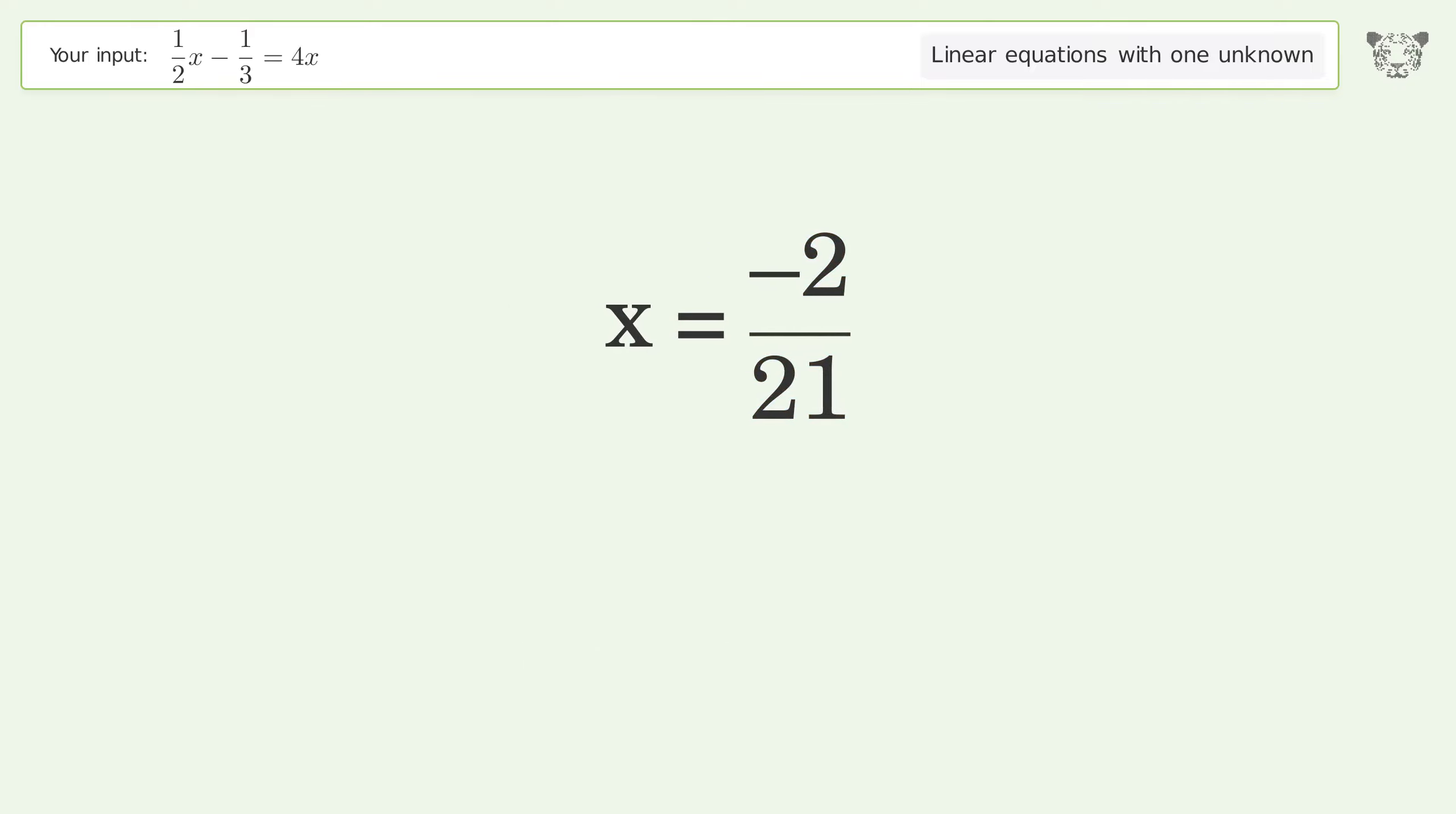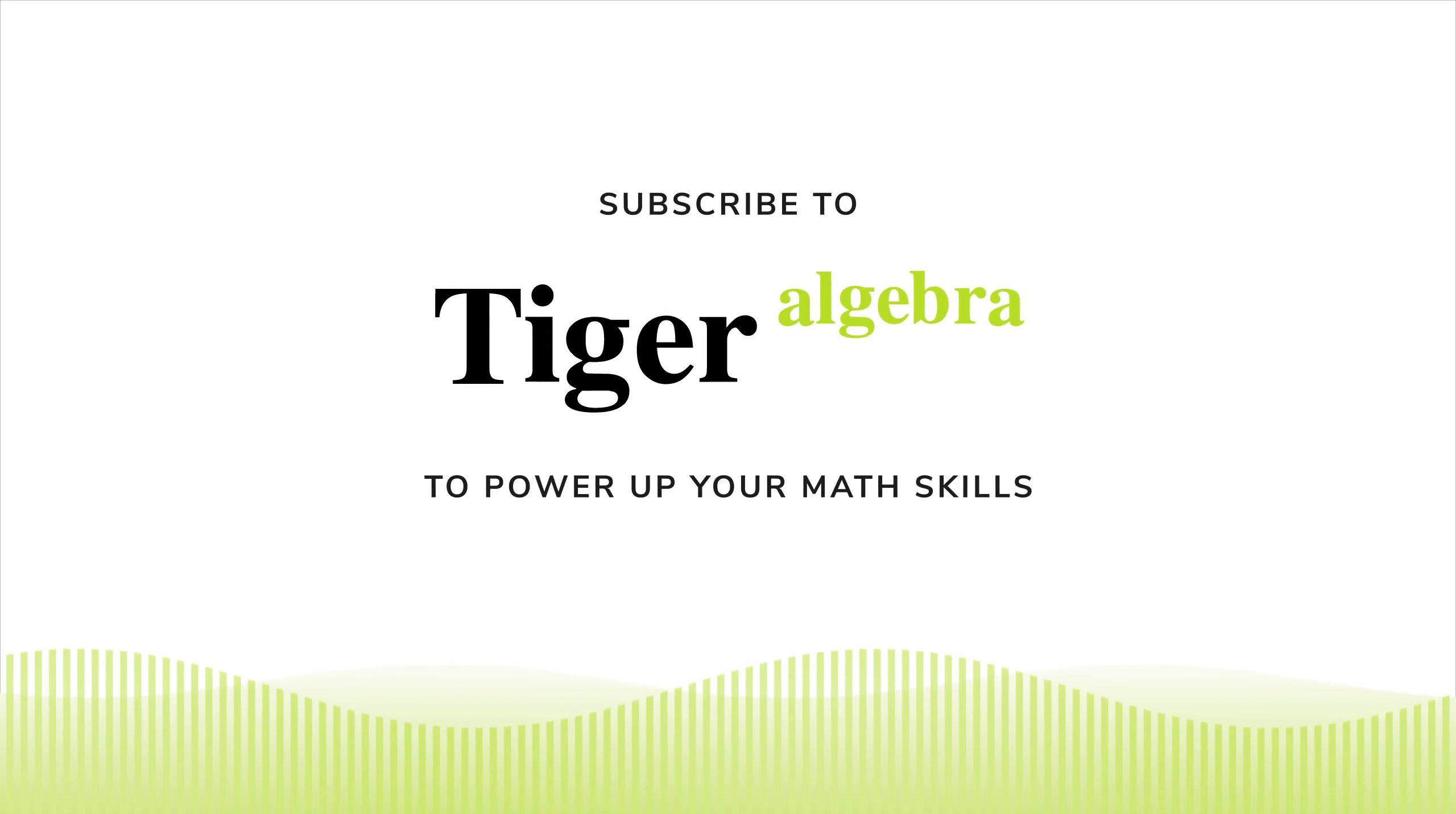And so the final result is x equals negative 2 over 21.